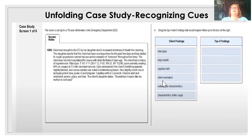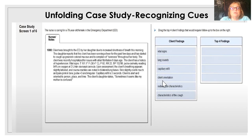Let's look at an unfolding case study — one of the methods of questions you'll see on the Next Generation NCLEX exam. We have a 78-year-old female brought to the emergency department by her daughter with increased shortness of breath. Her daughter says she's been running a fever for a few days, has started to cough up greenish-colored mucus, and complains of soreness throughout her body. She was recently hospitalized for AFib six days ago and has a history of high blood pressure. On arrival: temp 38.4, pulse 92, respiratory rate 22, BP 156/86, and pulse ox 94% on 2L by nasal cannula.